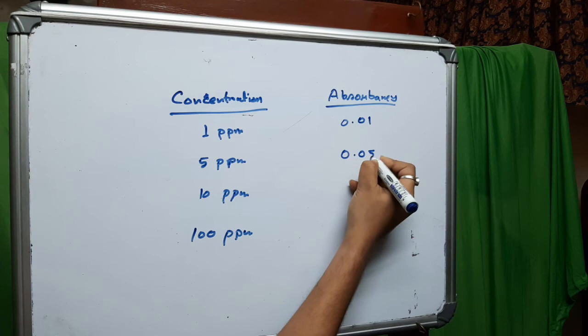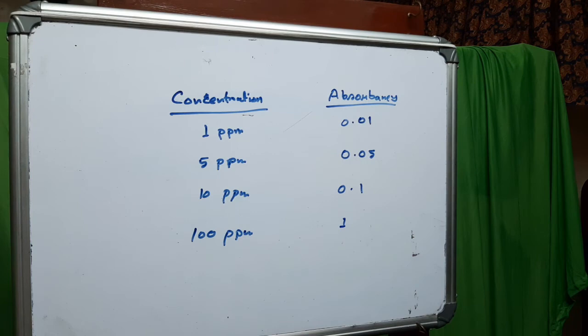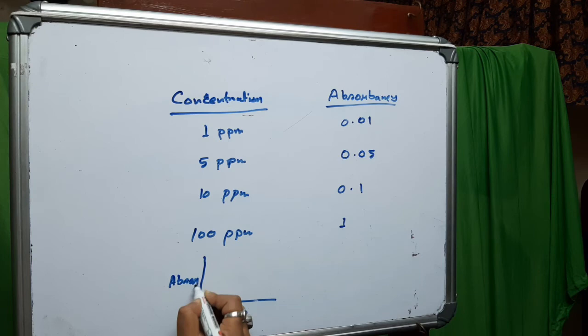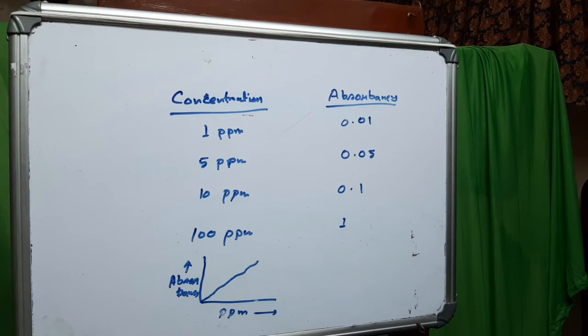For example: 1 ppm gives absorbance 0.01, 5 ppm gives 0.05, 10 ppm gives 0.1, and 100 ppm gives 1. Then make a graph of ppm versus absorbance. This graph goes through the origin because at concentration 0 the absorbance is 0. This relationship is called the calibration curve.